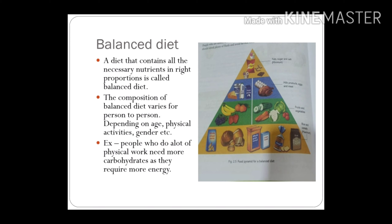For example, a person who does a lot of physical work needs more carbohydrates for energy. A person working in an office with long sitting hours should keep energy-giving food low and include more fruits and vegetables in their diet.